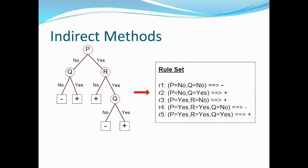The indirect method uses C4.5 rules: extract rules from an unpruned decision tree. For each rule R: A → y, consider an alternative rule R' formed by removing one conjunct. Find accuracy and coverage of R'. Compare with the pessimistic error rate and prune if beneficial. Repeat until no longer improving generalization error.